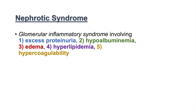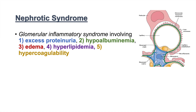Nephrotic syndrome is actually a glomerular inflammatory syndrome involving five different aspects. The first is excess proteinuria, the second is hypoalbuminemia, the third is edema, the fourth is hyperlipidemia, and the fifth is hypercoagulability. I'm going to show a picture of a glomerulus with a glomerular basement membrane and a podocyte, and we're going to talk about how nephrotic syndromes and different diseases can affect different parts of this glomerular apparatus.